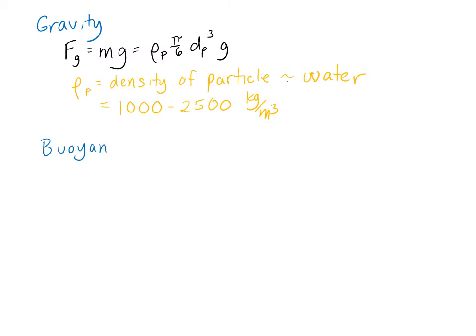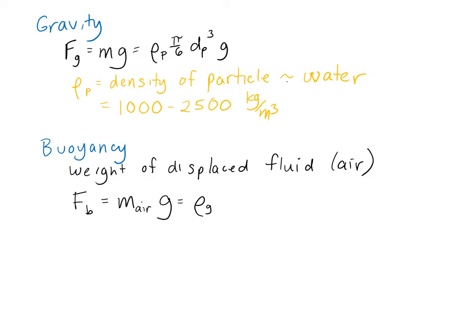The buoyancy force is the weight of the displaced fluid, which is air in this case. So f sub b is equal to the mass of the air times g, the mass of the air that's been displaced by the particle. And so this is rho sub g, that's the density of the air, or I'm calling it the gas, times the volume that's been displaced, which is pi over 6 d sub p cubed times g. So rho sub g is the density of the gas, which is air in this case, and is 1.2 kilograms per cubic meter under standard conditions.